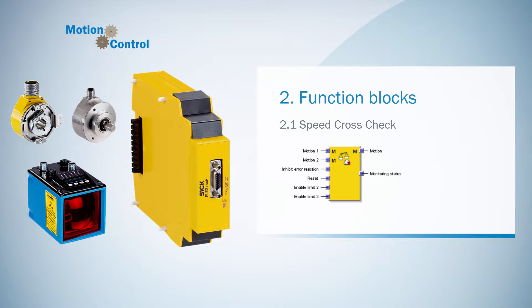This function block generally compares speed values from two different signal sources. The checks made during this process are used to achieve a higher level of safety, in particular if non-safety encoders are used. Sometimes there are temporary or even continuous differences between two measured values — this happens for example by slip, friction, or mechanical behavior. Therefore the function block provides various parameters that can be used to compensate such differences. In this way, wrong switching can be prevented and the availability of the machine safeguarded.